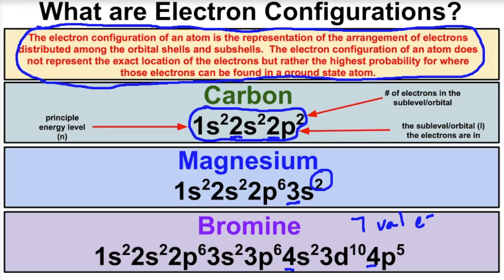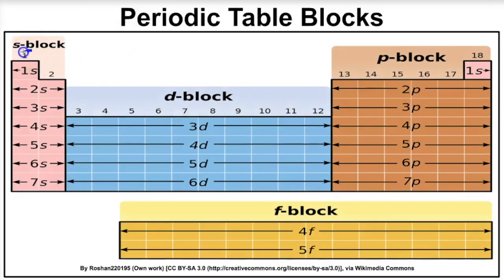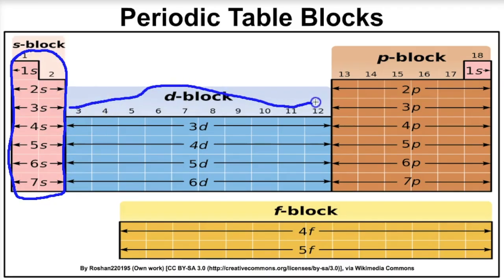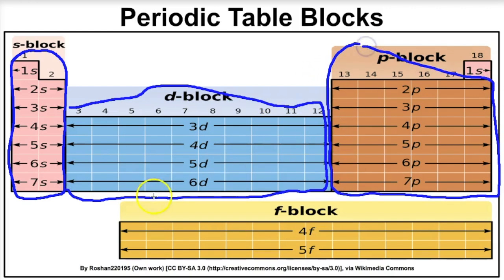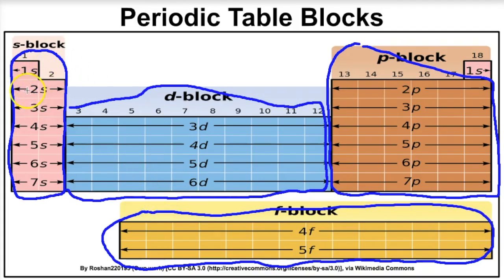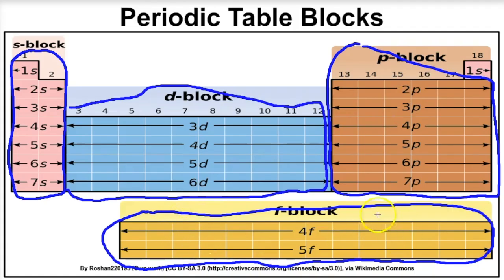When writing electron configurations, it's important to understand the periodic table broken down into blocks. The alkali and alkaline earth metals form the s-block. Groups 3 through 12 are the d-block. The right side is the p-block, and the actinides and lanthanides form the f-block. The s sub-level holds a maximum of 2 electrons — there are two columns in the s-block. The d holds 10, p holds 6, and f holds 14 electrons, matching the number of columns in each block.